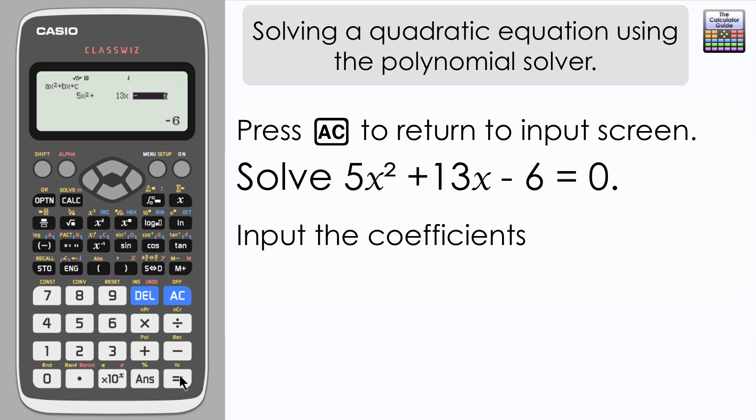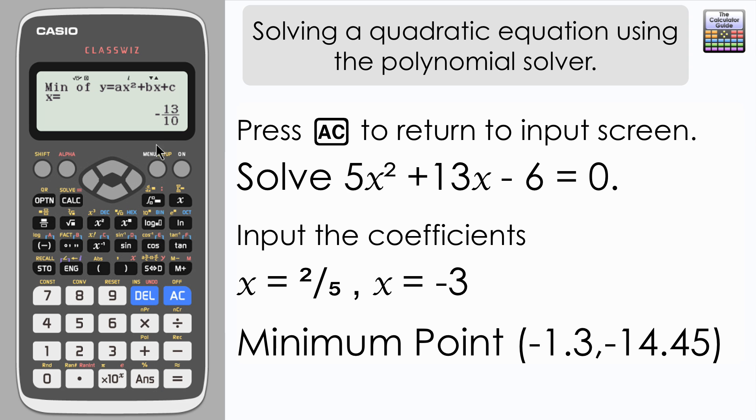And equals to get the solutions. So x equals 2 fifths or x equals minus 3. And if we press equals then we can find the minimum point on the graph as well.